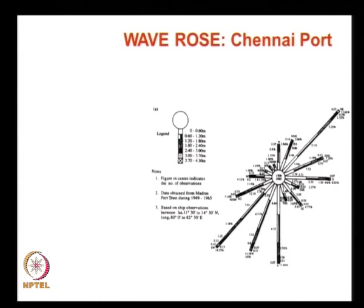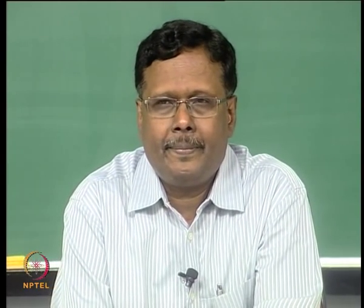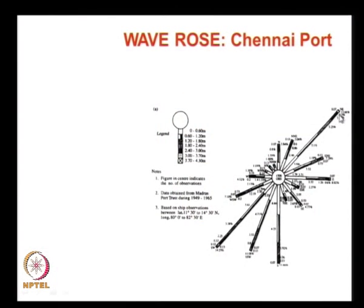Which direction has more waves? North east, then south west. So the north east direction has a higher percentage of occurrence. There is a symbol given here — if it is a white patch without any symbol, it is 0 to 0.6 meters wave height.